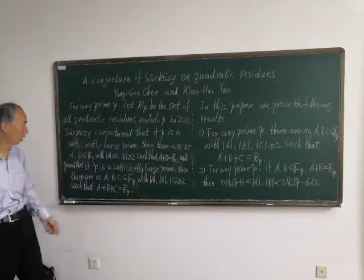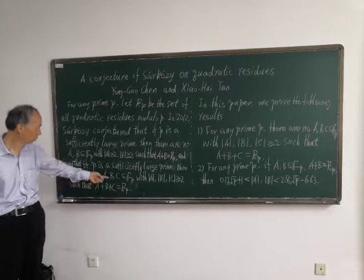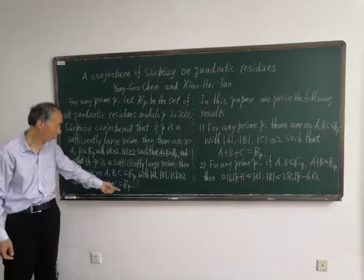In this paper, we prove that if P is a sufficiently large prime, then there are no subsets A, B, C with cardinality more than or equal to 2, such that A plus B plus C is equal to R_P.